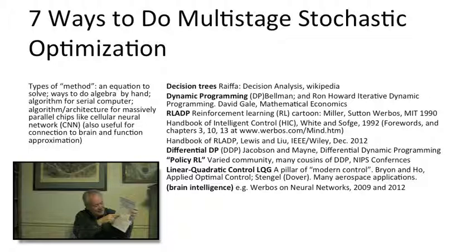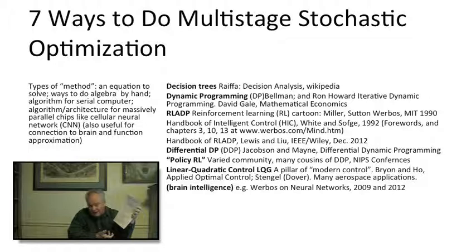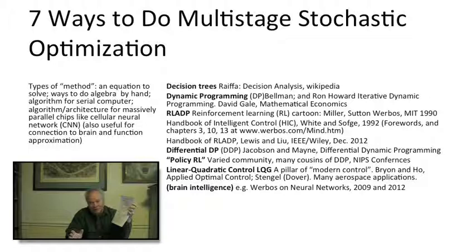A fourth very important method — let me mention two methods together. There's something called Differential Dynamic Programming, DDP, and Policy Reinforcement Learning. These two methods are very different from the others, because they try to solve stochastic optimization without the Bellman equation. The Bellman equation is generally true for any stochastic decision problem, and you want to use that information. The basic approach without it is to do a lot of stochastic simulations and try to learn what works best.